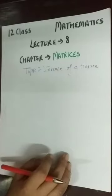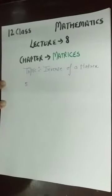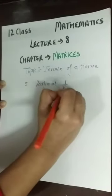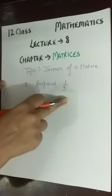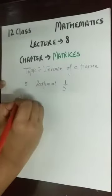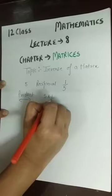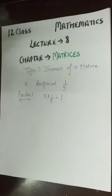Let's look at simple numerical values. If we have 5, and we talk about its reciprocal, that is 1/5. So 5 and 1/5 are reciprocals of each other. And if I take the product of these two — 5 into 1/5 — we get 1. Any numerical value multiplied with its reciprocal gives 1. So if the product gives 1, they are reciprocals of each other.